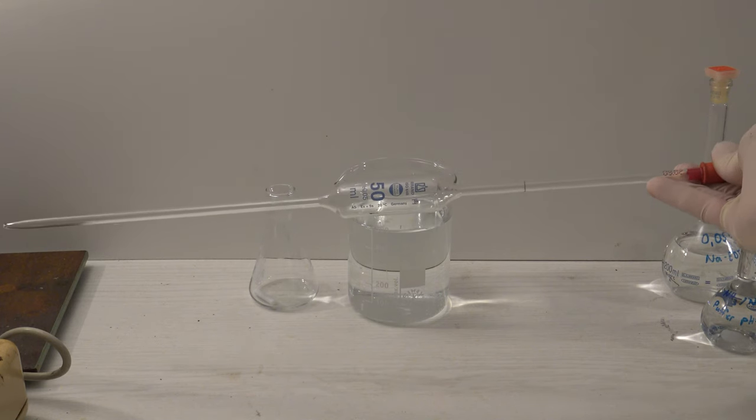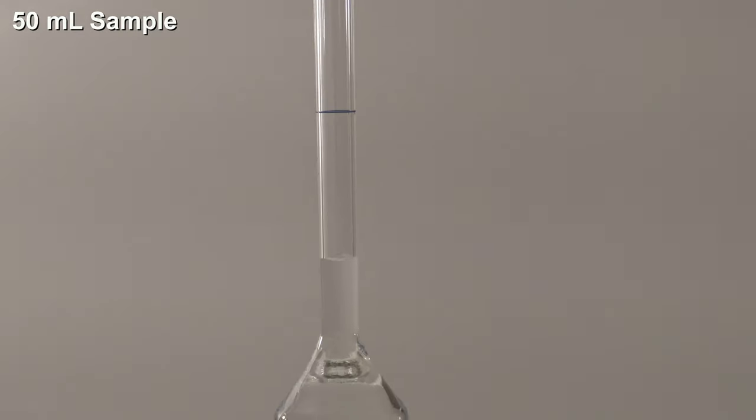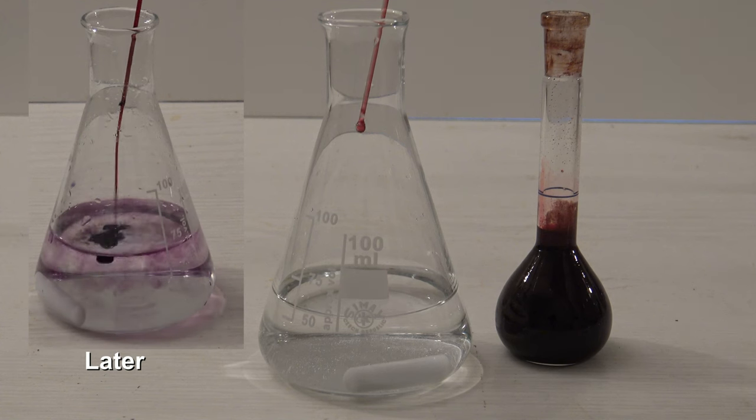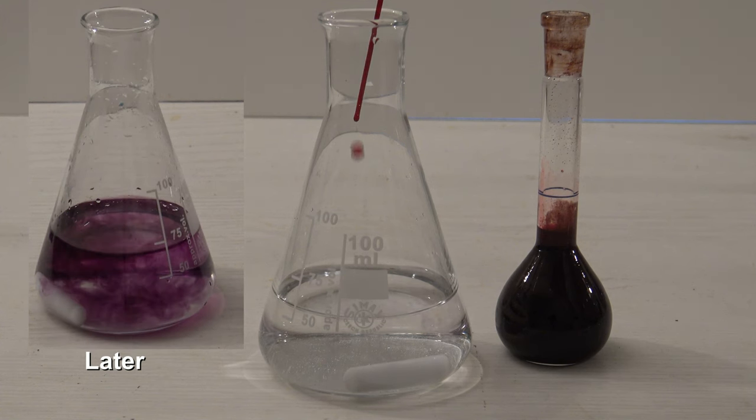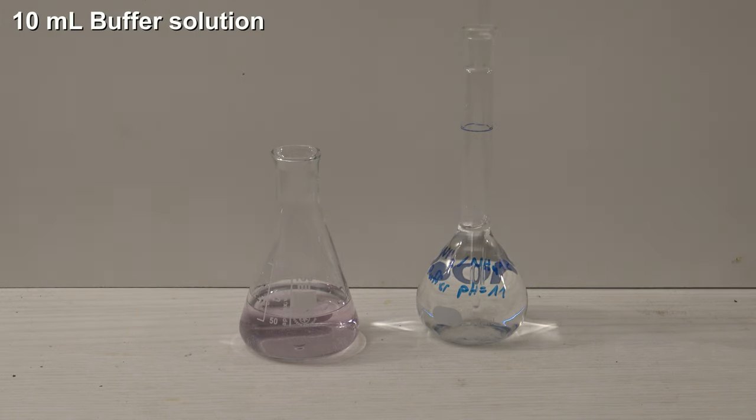Next, a sample of 50 ml is taken from the water that should be measured. Then the indicator is added. It was found out that the amount was way too low, so more should be added. After adding 10 ml of the buffer solution, the sample is ready for the titration.